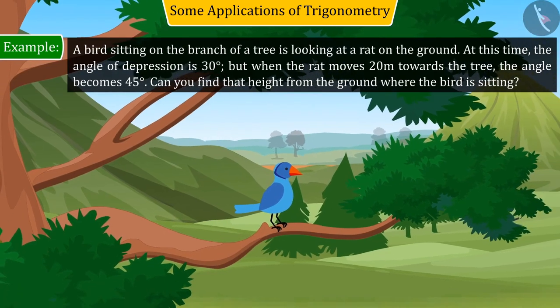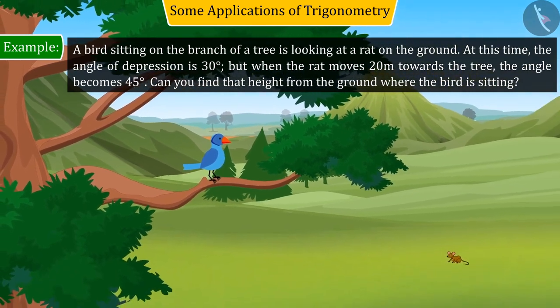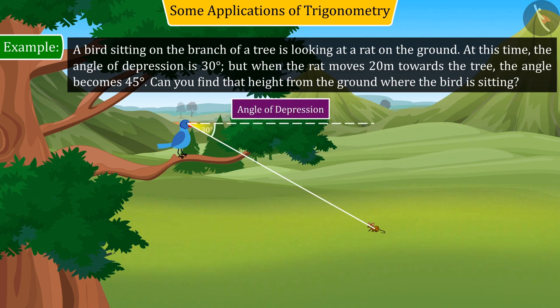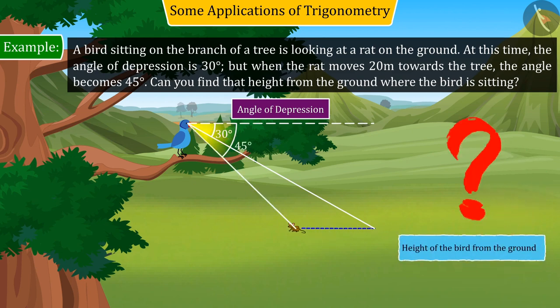A bird sitting on the branch of a tree is looking at a rat on the ground. At this time, the angle of depression is 30 degrees, but when the rat moves 20 meters towards the tree, the angle becomes 45 degrees. Can you find the height from the ground where the bird is sitting?